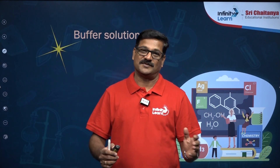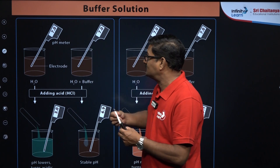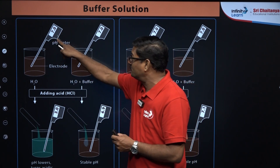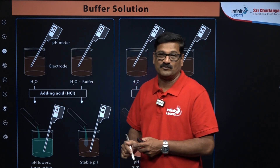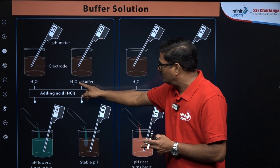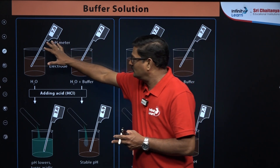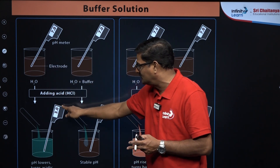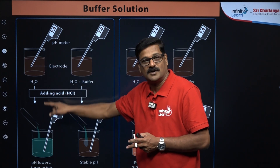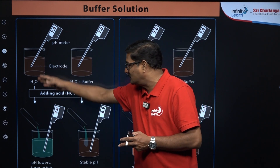What is this buffer solution? Let us exemplify what is going to happen when pure water is taken. We have a pH meter — for pure water at 25 degrees centigrade, the pH is going to be 7. When you take water plus a buffer, the pH is also going to be 7. Now, water without a buffer solution — when you add a little bit of HCl, the pH of the water decreases because the acidity of the acid decreases it.